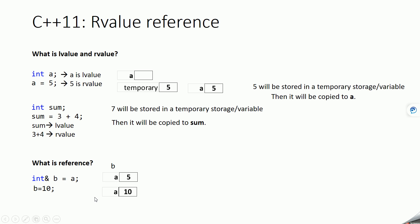Now if you try creating an alias or reference variable using an r-value, the compiler will give you an error, because you can only create a reference variable from an l-value. You cannot create a reference variable using an r-value.